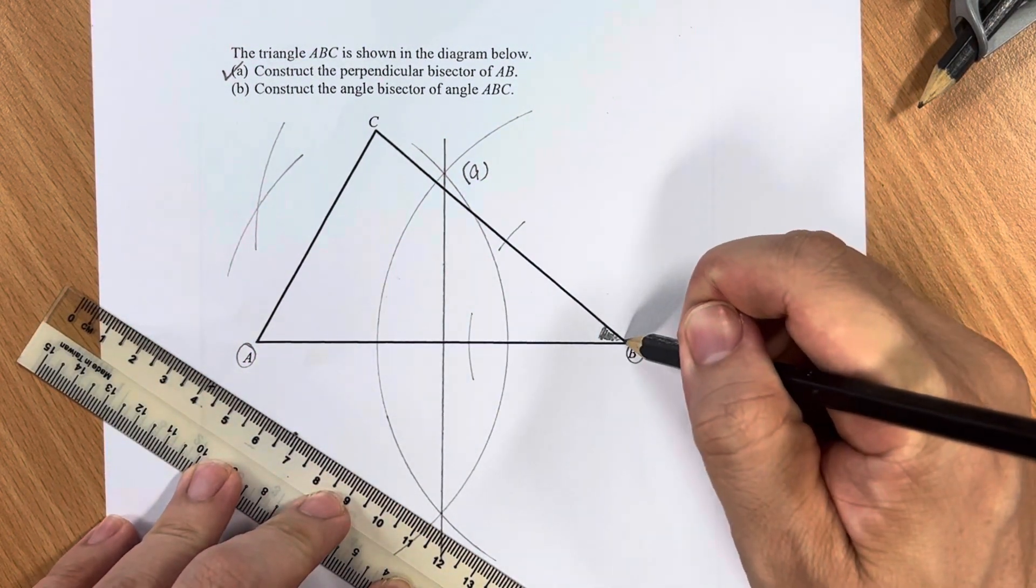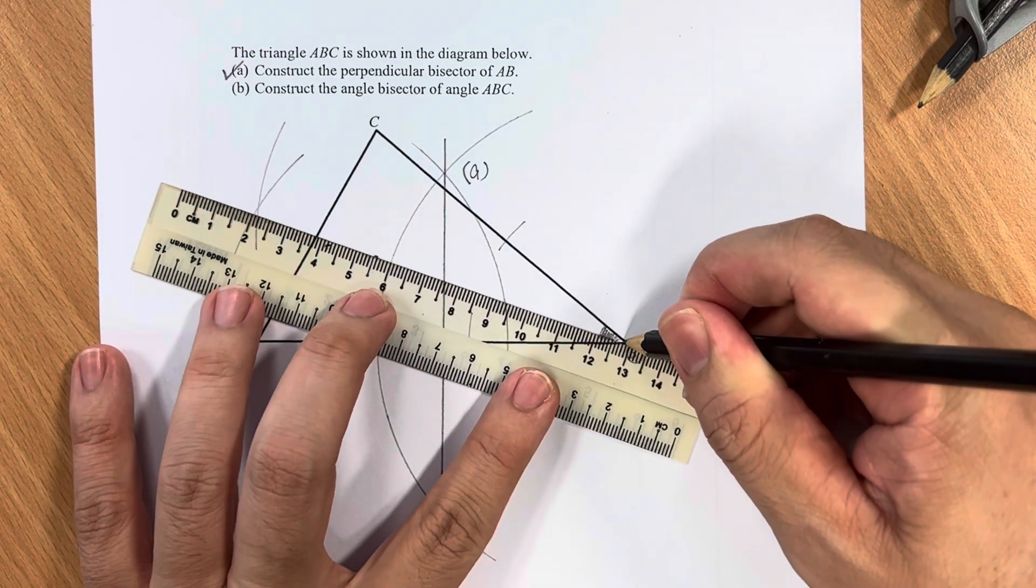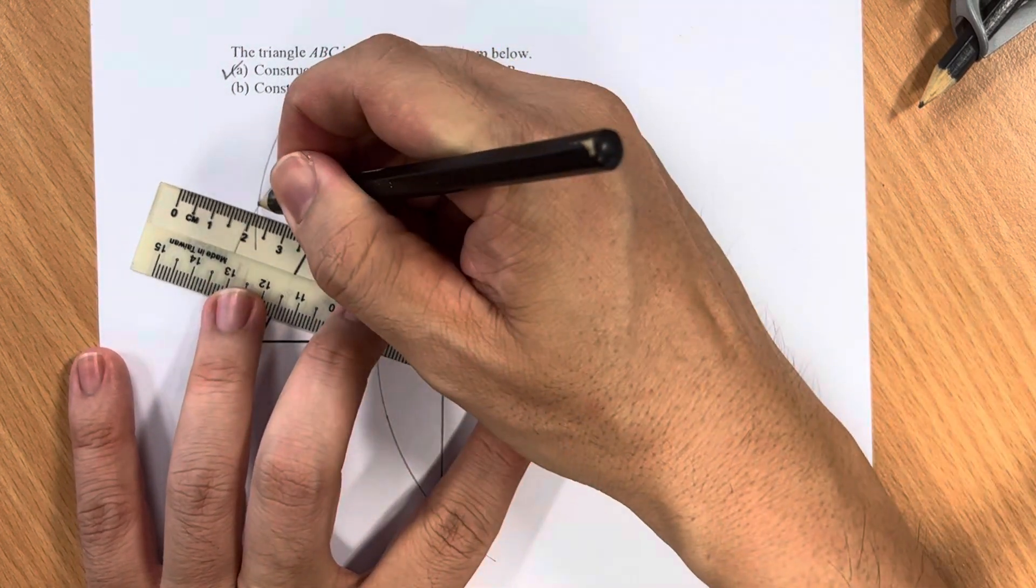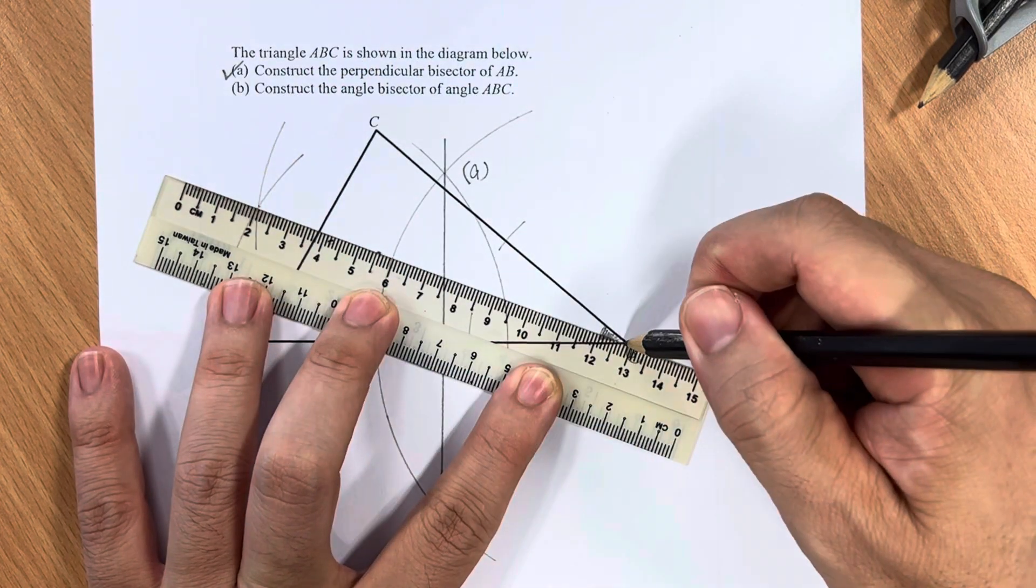Then, when I draw from point B to this intersection point using a ruler, this particular line, which we call a bisector, cuts angle ABC into two equal parts.